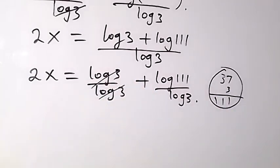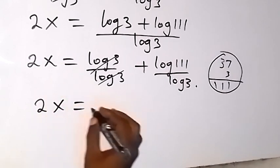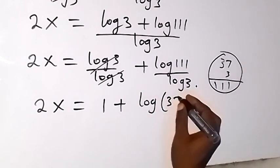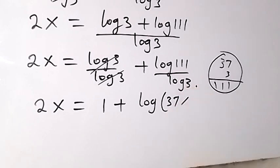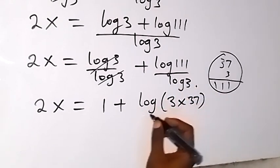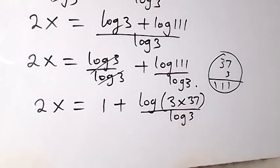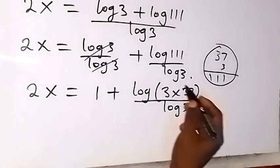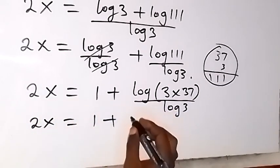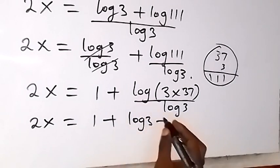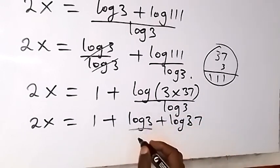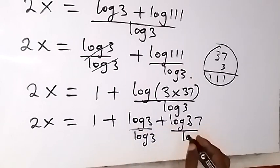So we can replace this 111 with 37 times 3. We now have 2x which will be equal to 1 plus, we write log 37 times 3, or we have 3 times 37. So we have log 3 times 37, then over log 3. And applying the same law of logarithms that we separated this one into 2 logs. So we have 2x gives us 1 plus, we have log 3 plus log 37. Don't forget that everything is divided by log 3. So I can say each of them, when I separate it, we divide by log 3 and over log 3.